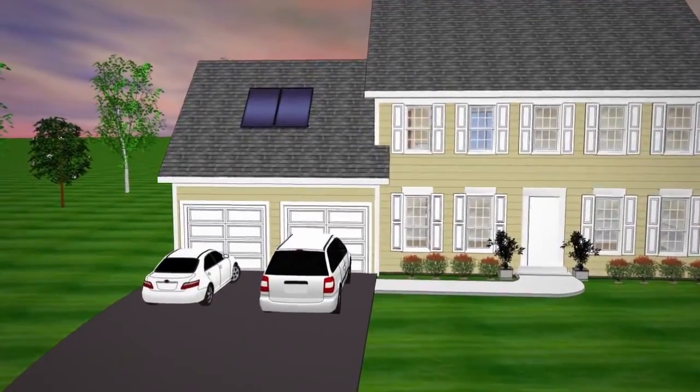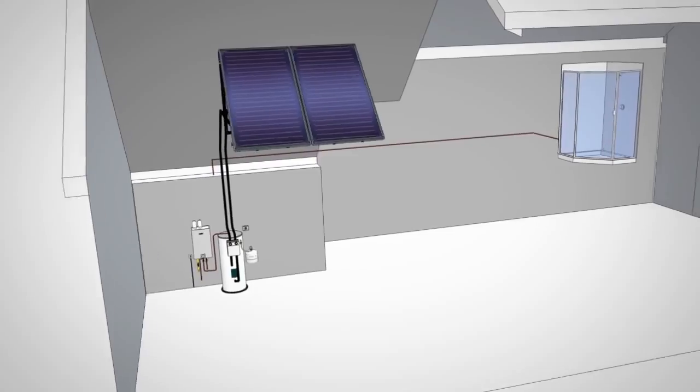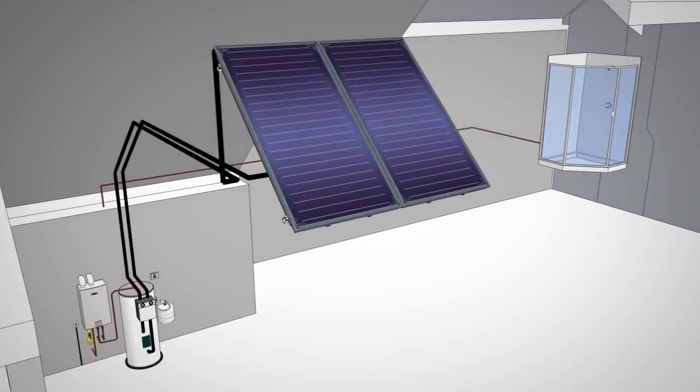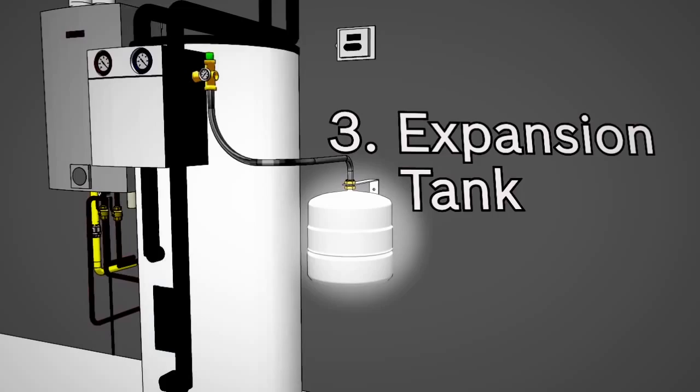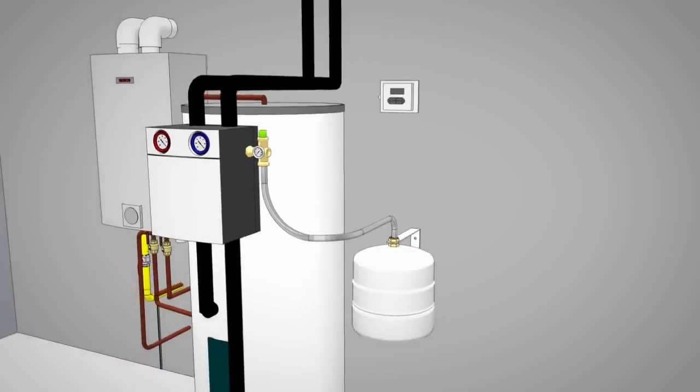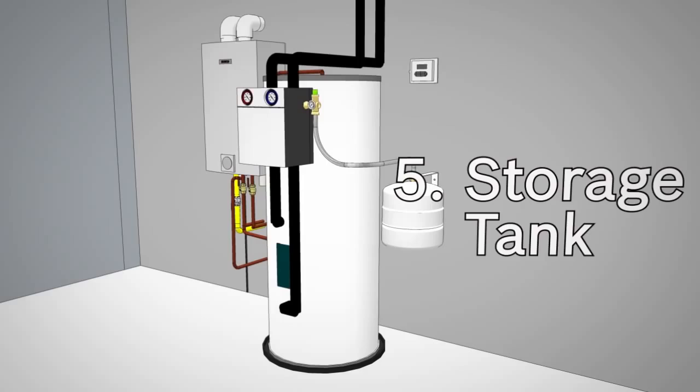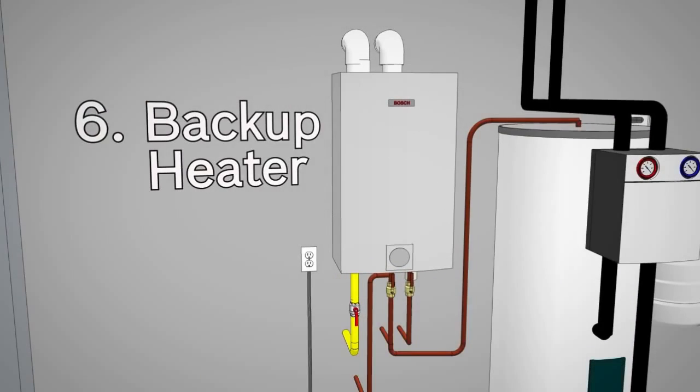A Bosch solar hot water heating system consists of six main components: solar collectors, pump station, expansion tank, differential controller, hot water storage tank, and a backup heater, such as a boiler or a tankless water heater.